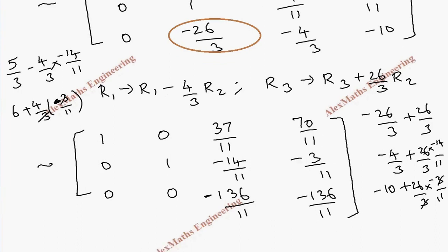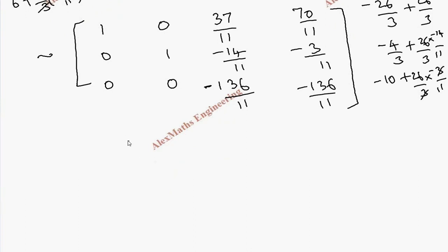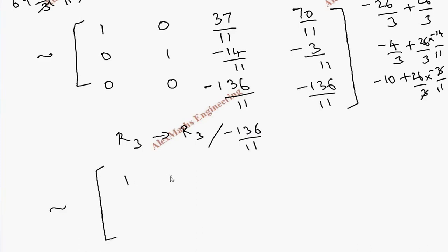Now let's make 1 in row 3. Row 3 is completely divided by -136/11. We write the rest of the elements as they are, and row 2 again as it is.